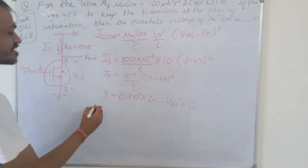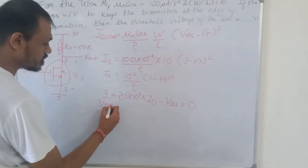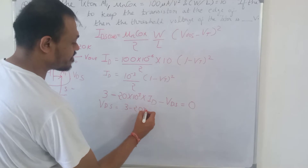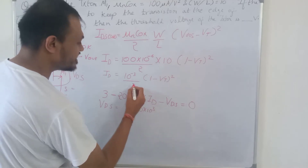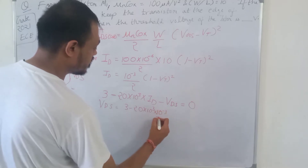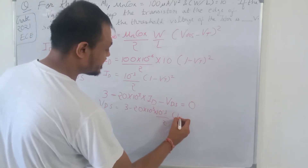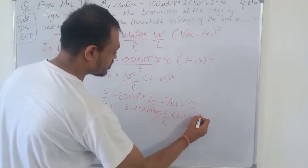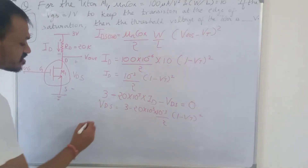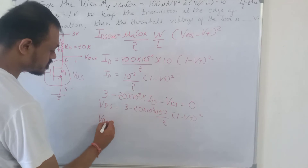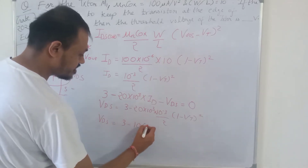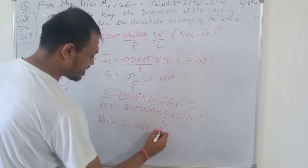So VDS equals 3 minus 20×10³ multiplied by ID. Substituting ID, VDS equals 3 minus 10·(1 − VT)².